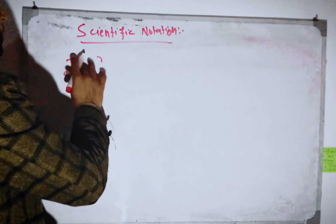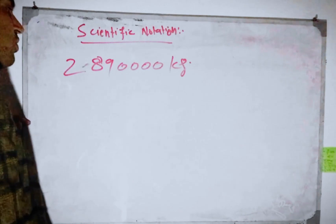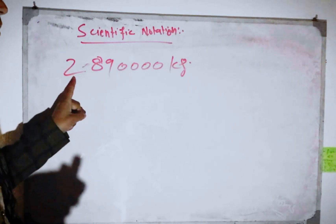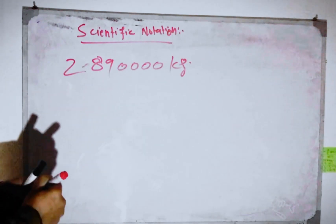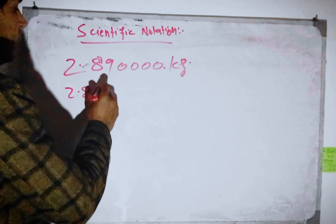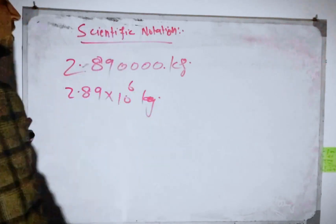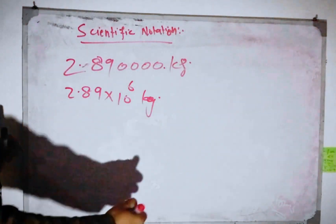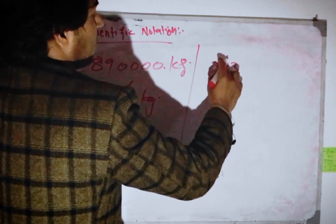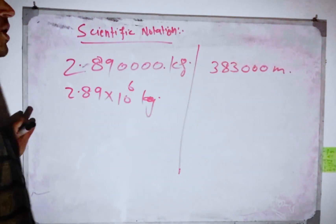For the assignment: convert 2.328900000 kilograms into scientific notation. The decimal moves — count the zeros, right side goes left side — giving two point eight nine multiplied by 10 power 6. Also convert: 3.8300000 meters into scientific notation. Please put your answer in the comment section.